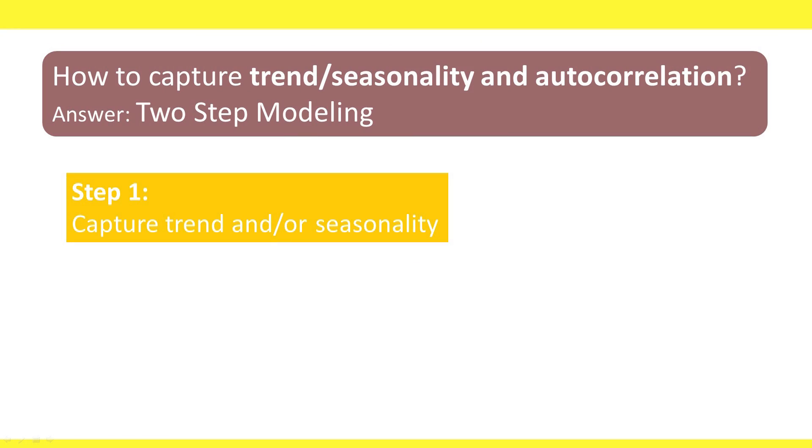In order to apply an AR model to a series that does exhibit trend and/or seasonality, we can take a two-step approach. In the first step, we capture any existing trend or seasonality patterns in the series. We've already seen several methods for removing such patterns. We can fit a linear regression, and then its residual series will no longer contain trend or seasonality. Or we can fit an advanced exponential smoothing method, and once again, the residual series should no longer contain trend or seasonality. Or we can apply differencing at appropriate lags.